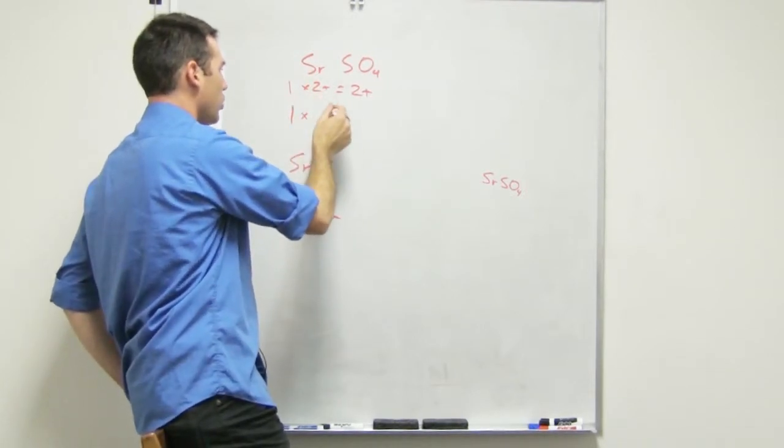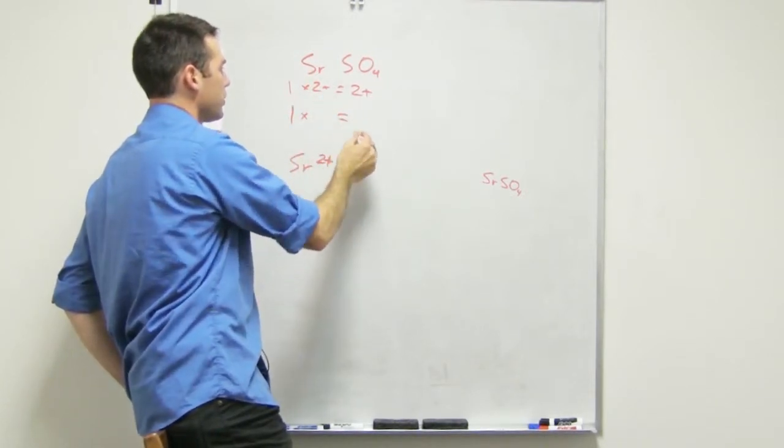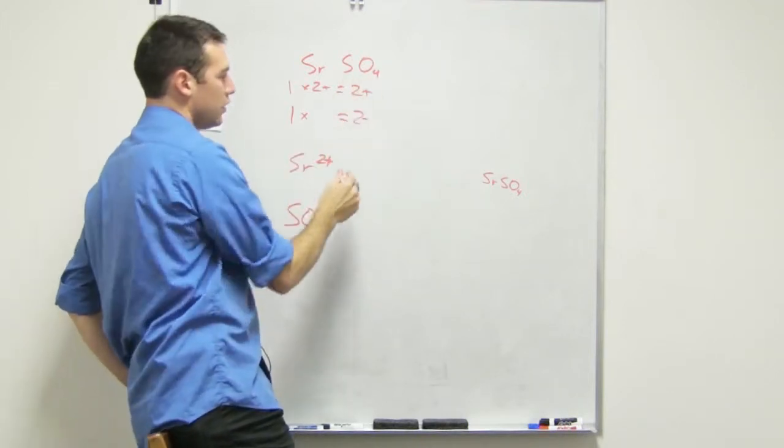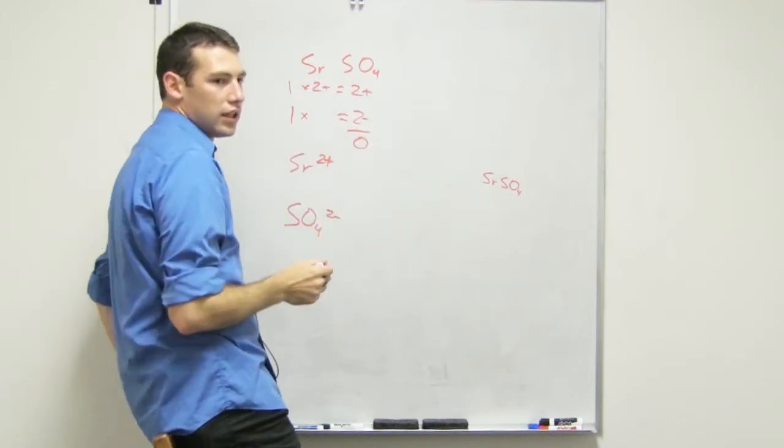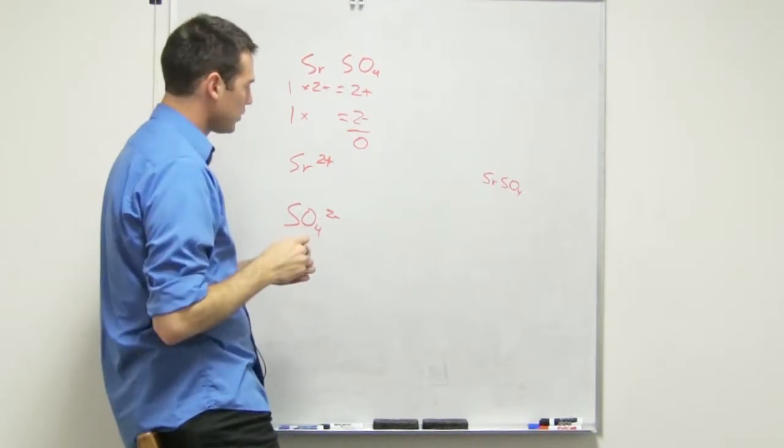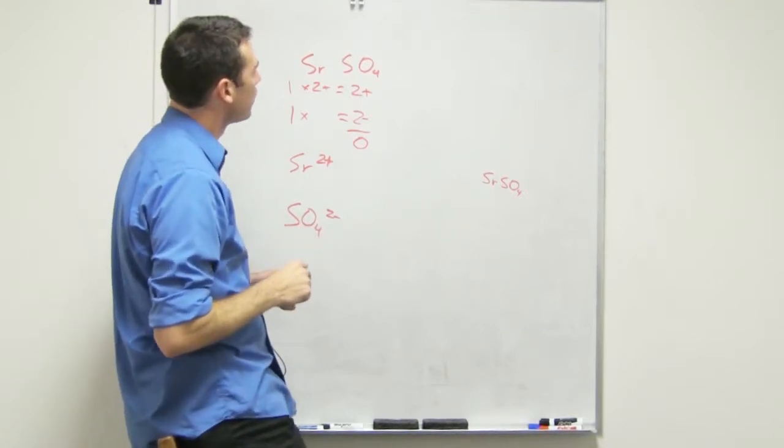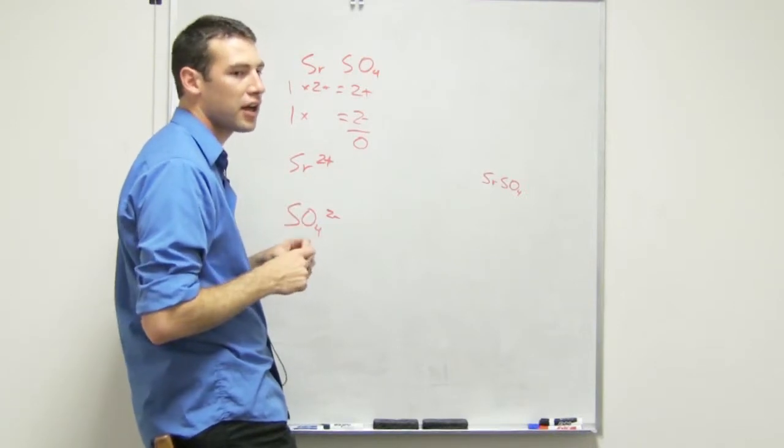...equal two minus to cancel out. Why minus? Because you have S... where's S? S has a negative six. But the thing is, this is a polyatomic ion.